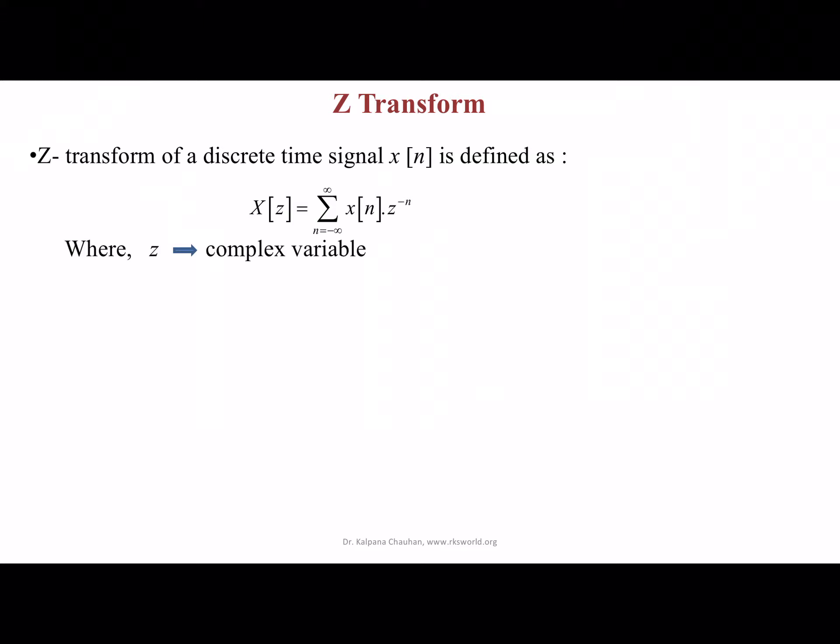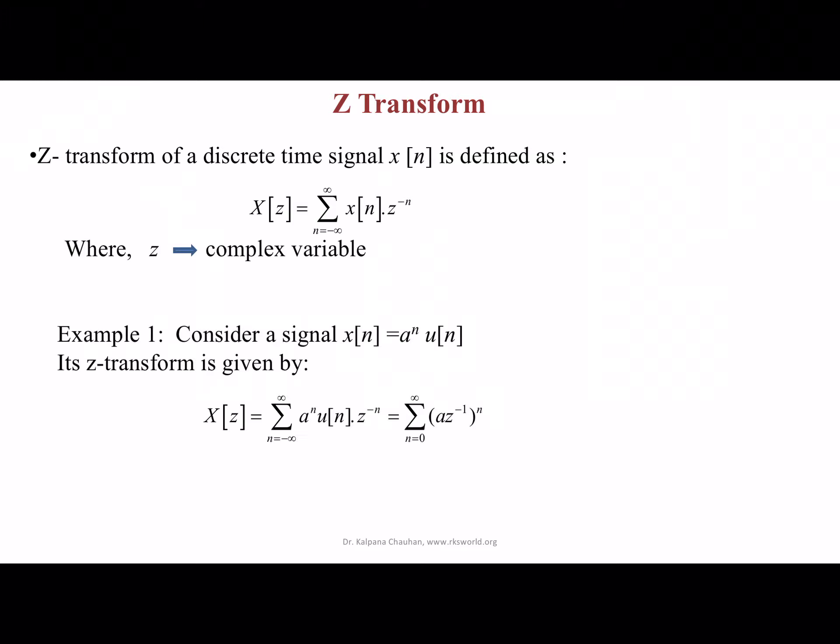Z is a complex variable. So that is all about the Z-transform definition. Let's take an example of how we represent the Z-transform.